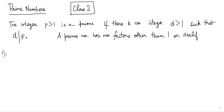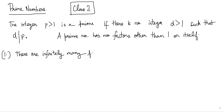The first thing you need to know is that there are infinitely many primes. The proof of this is a classic theorem by Euclid. This is a proof by contradiction, which is a 2000-year-old proof, but very good.